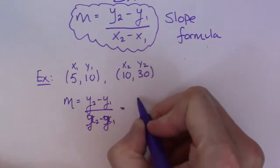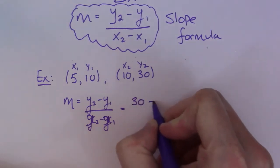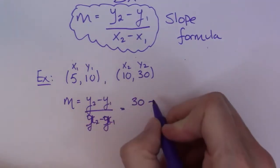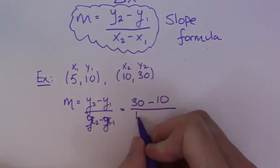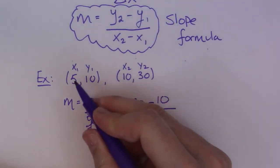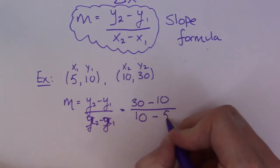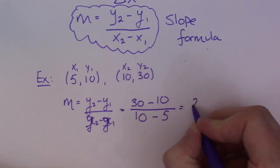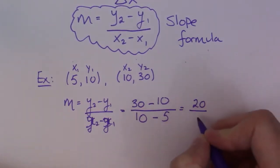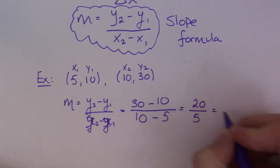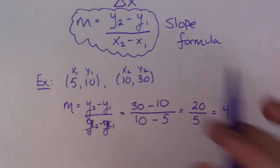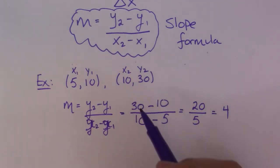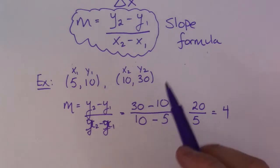So my Y2 is 30. My Y1 over here is 10. I'll divide it by my X2 is 10. My X1 is 5. So I get 20 over 5, which is equal to 4. And there it is, guys. That's as simple as that. That's how the slope formula works. Given two points, you can find the slope.